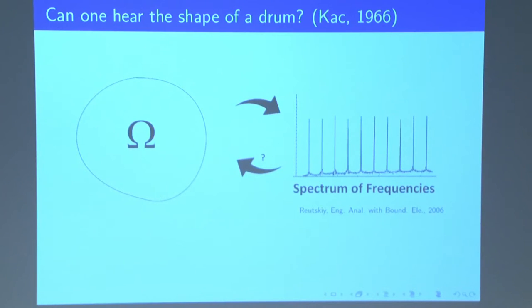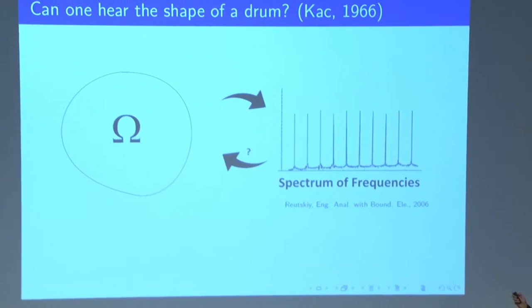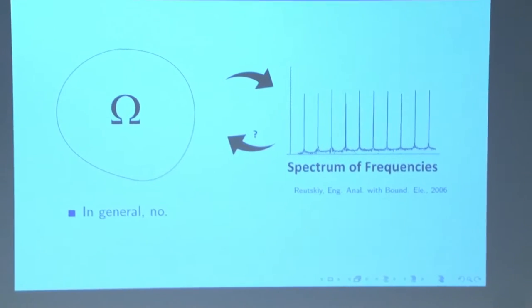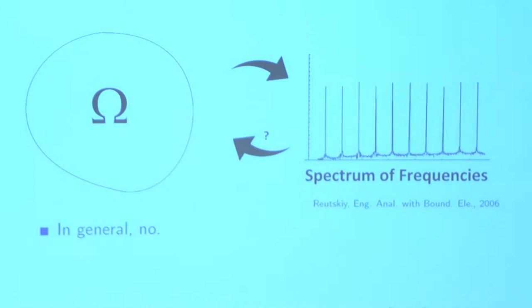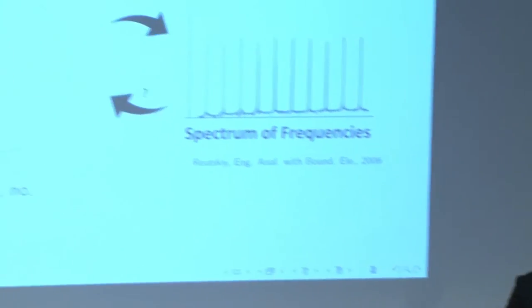But back to Kac's question, it turns out the answer to Kac's question, in general, is no. You can actually find lots of counterexamples of two drums that have the same spectrum but have different geometries. An example was found by John Milnor. He found that two 16-dimensional tori that had the exact same spectrum but had completely different shapes.